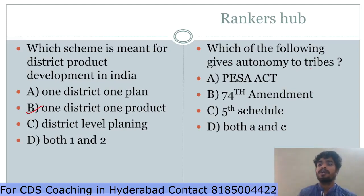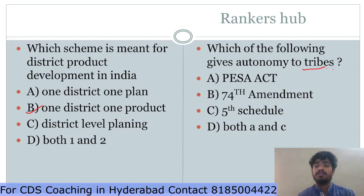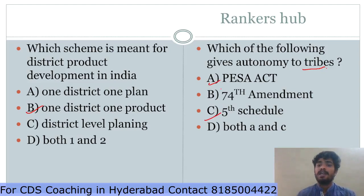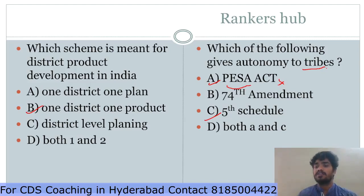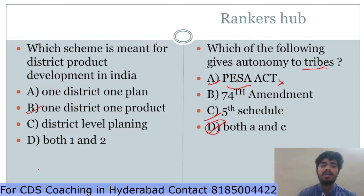Which of the following gives autonomy to the tribes in India? Every year in CDS you can expect one question from tribal topics. The options are PESA Act, 74th Amendment, and Fifth Schedule. In India, both the PESA Act and the Fifth Schedule give autonomy to tribes. The PESA Act is the extended Panchayati Raj Act for scheduled tribes, applicable to only 10 non-hill range states. The answer is option B.